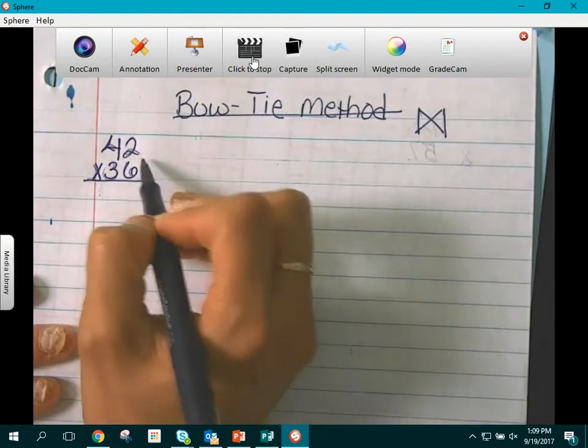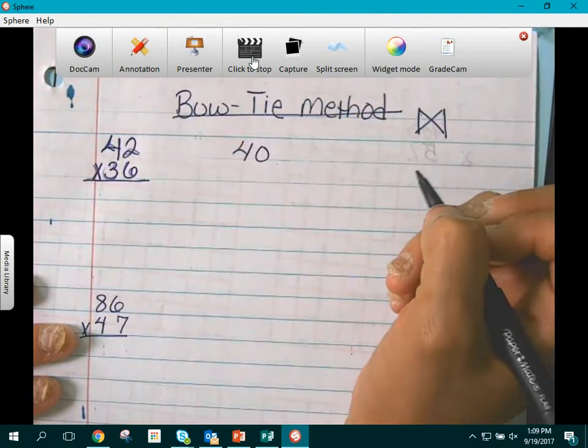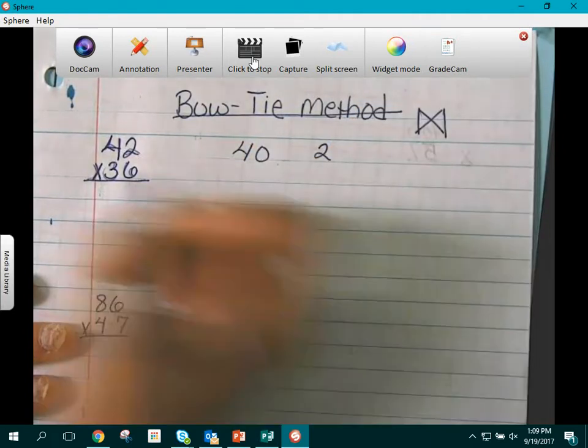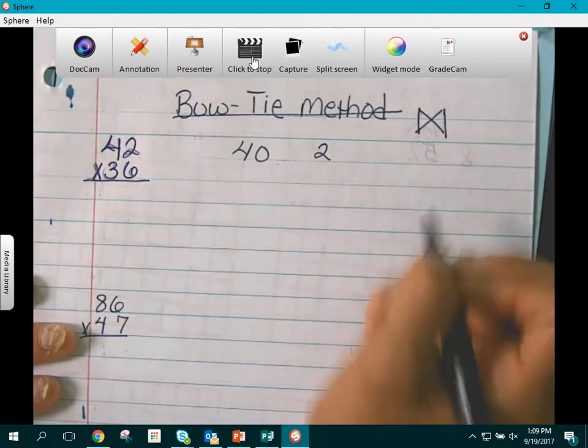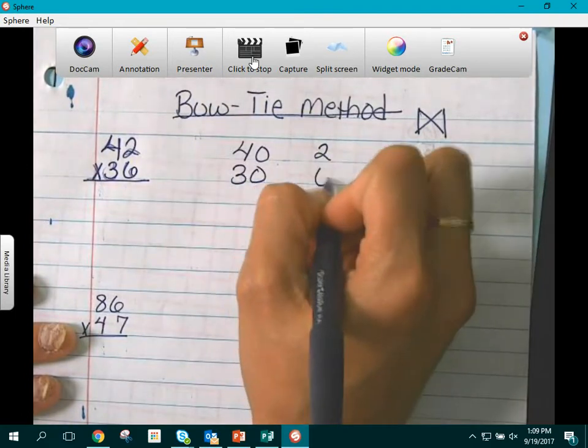So 42 is made up by 40, so 4 tens is 40, and 2 ones which is the 2. 36 is made up of 3 tens which is 30, and 6 ones which is just 6.